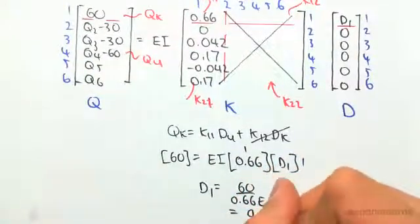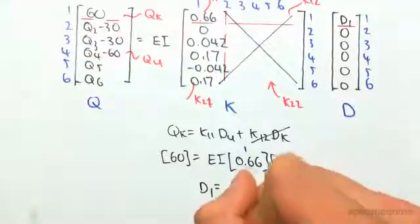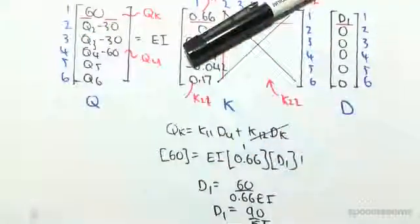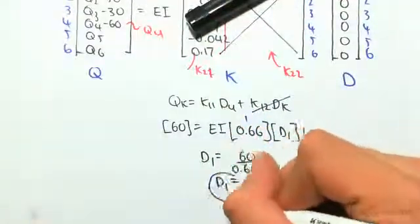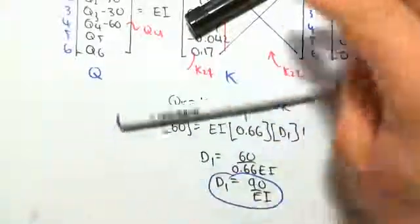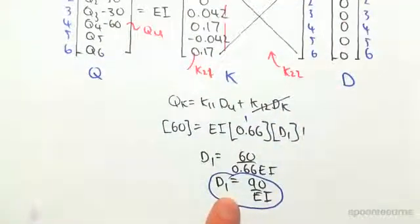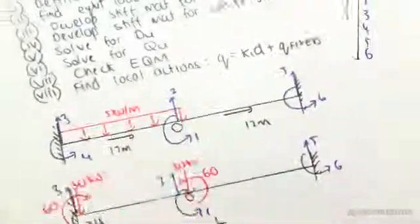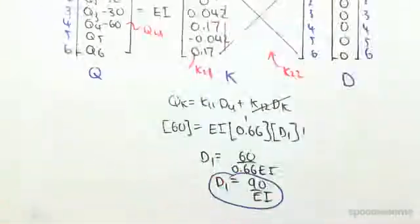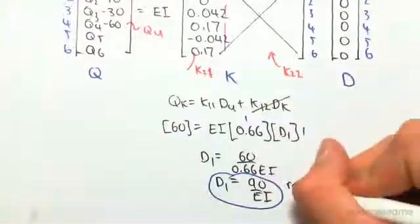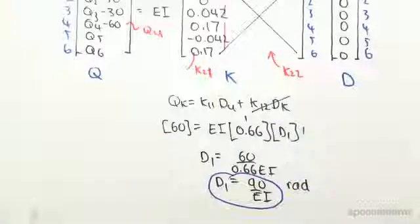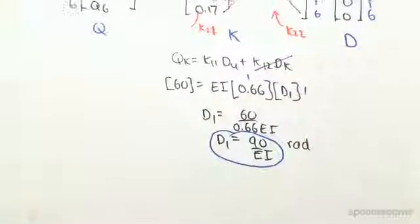90 on ei. So there's d1, we found our displacement at 1. Now because this is a moment, it's a rotational displacement. This would be in radians.